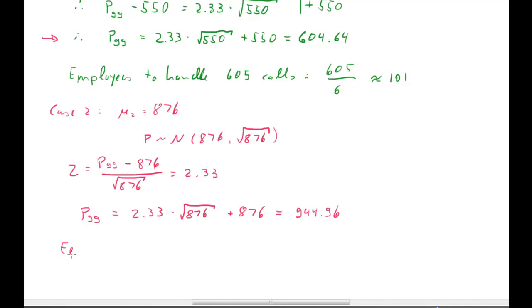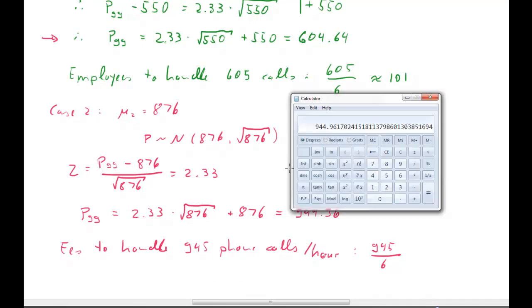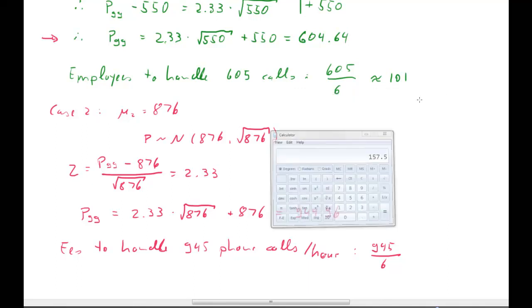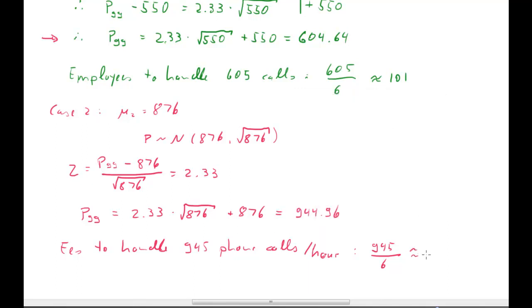That means the manager needs to handle approximately 945 phone calls per hour during peak time. The number of employees required is 945 divided by 6, which gives 157.5. Since you can't have half an employee, that rounds up to 158. So the manager needs 158 people during peak hours.